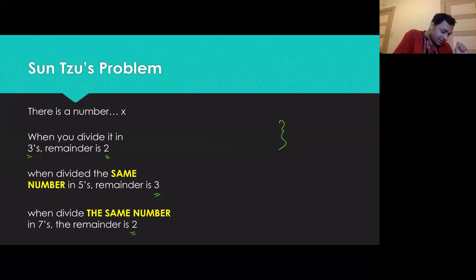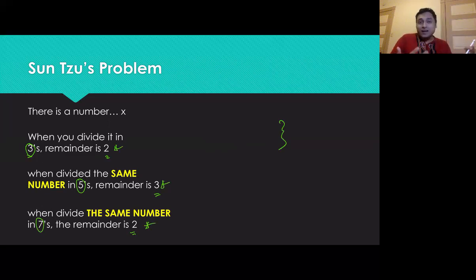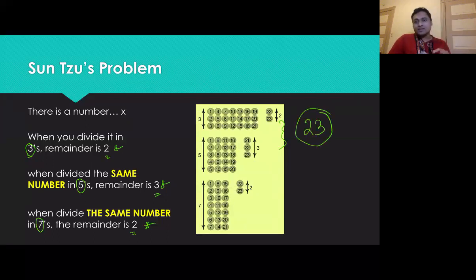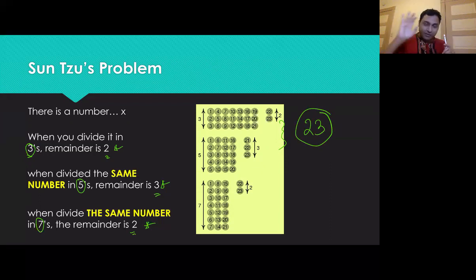So the divisors are three, five, and seven, and the remainders are given. You can also guess the answer by trial and error — it's not hard. The answer is 23. You can check: 23 divided by three gives remainder two, 23 divided by five gives remainder three, and 23 divided by seven gives remainder two.